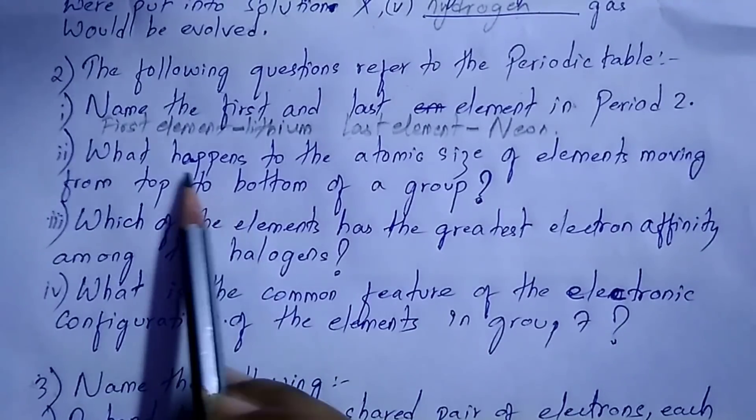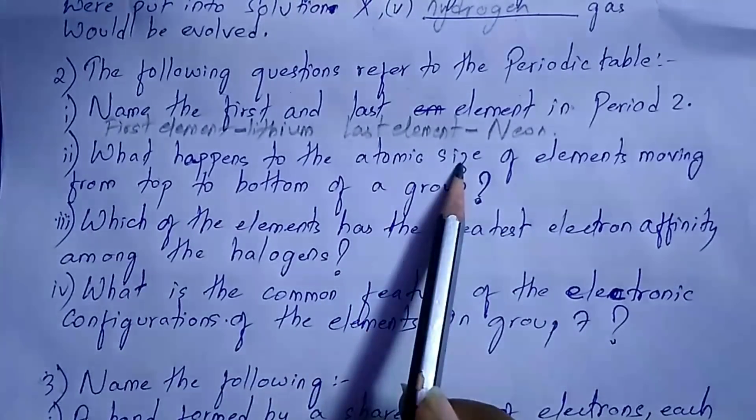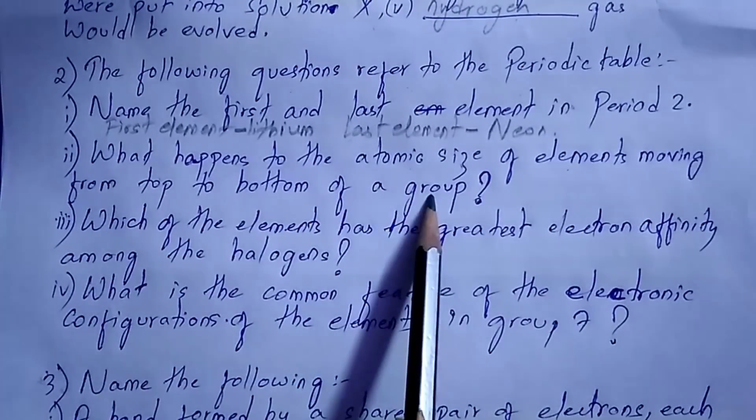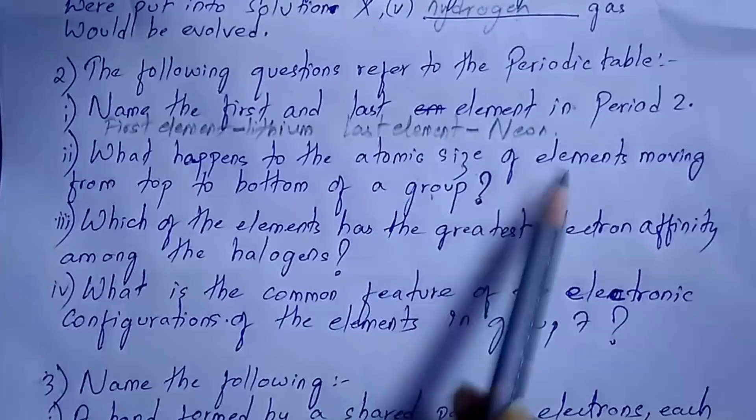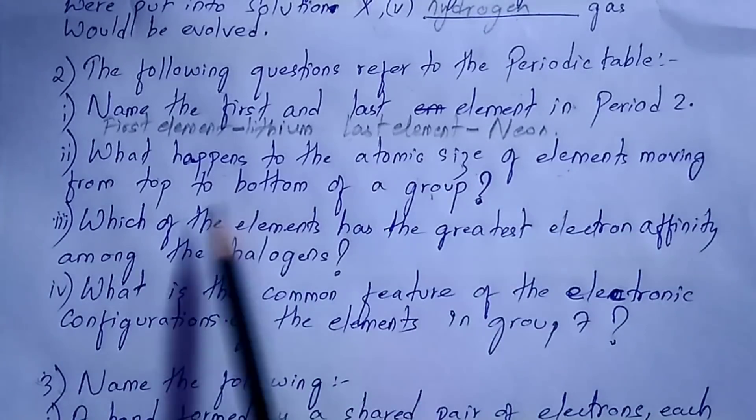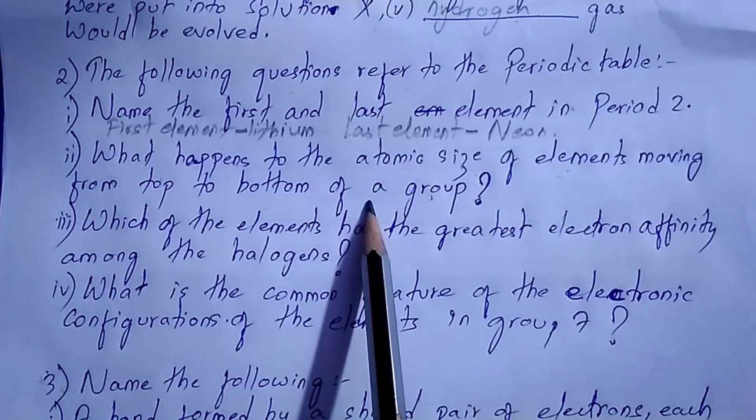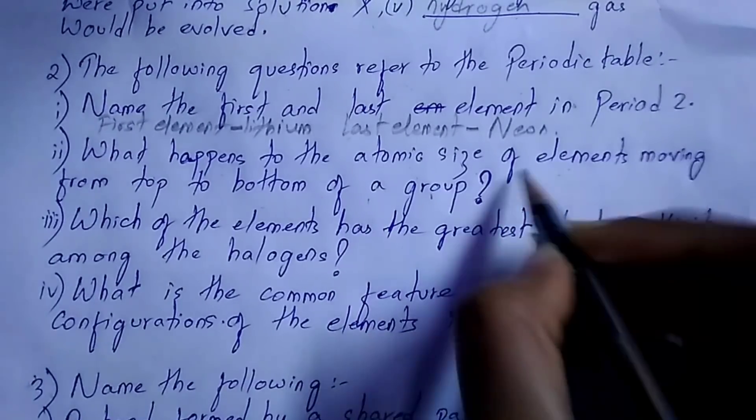Next question: what happens to the atomic size of elements moving from top to bottom of a group? The atomic size of elements increases from top to bottom in a group.